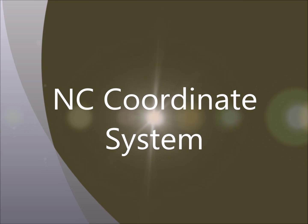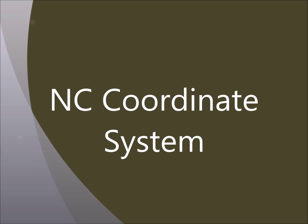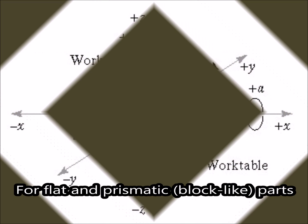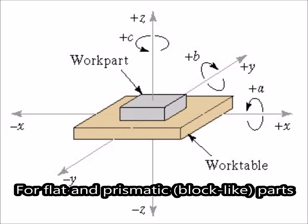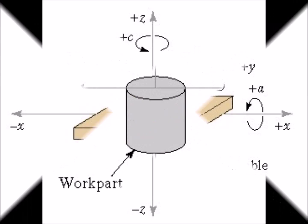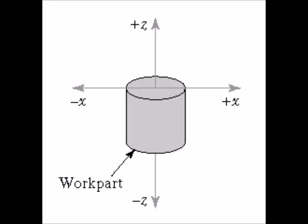There are two types of numerical control coordinate systems. The first type is for flat and prismatic or block-like parts, used for milling and drilling operations. As you can see in the picture, this coordinate system has three axes: X, Y, and Z. This second picture shows the coordinate system for rotational parts, used for turning operations, and has only X and Z axes.